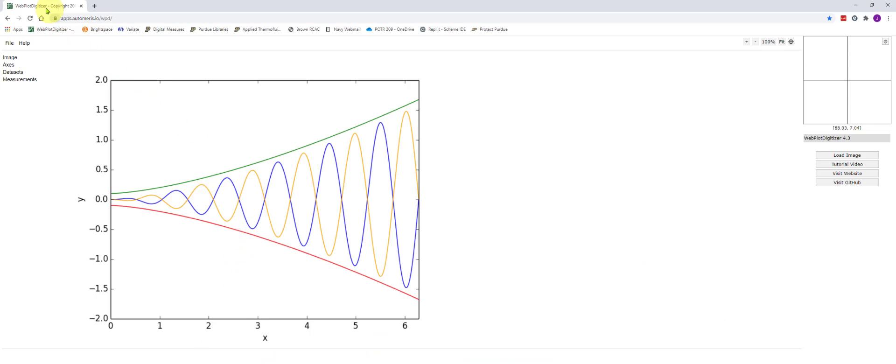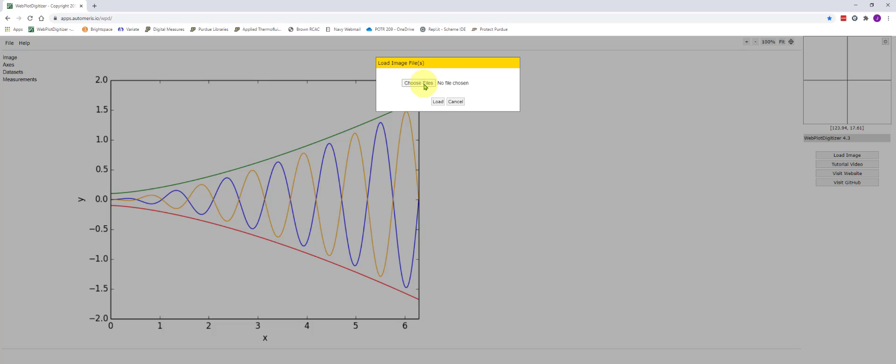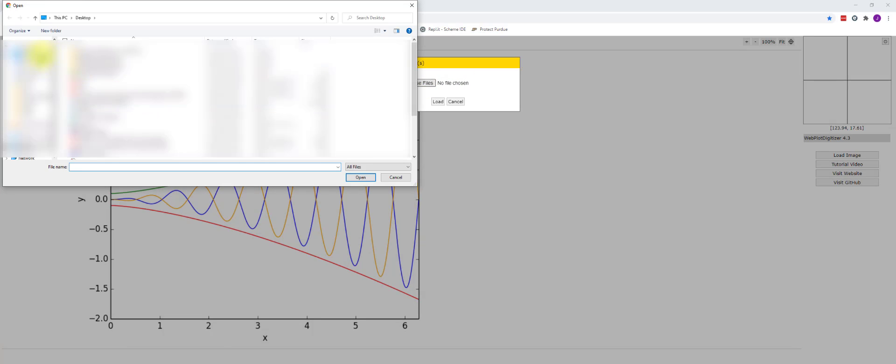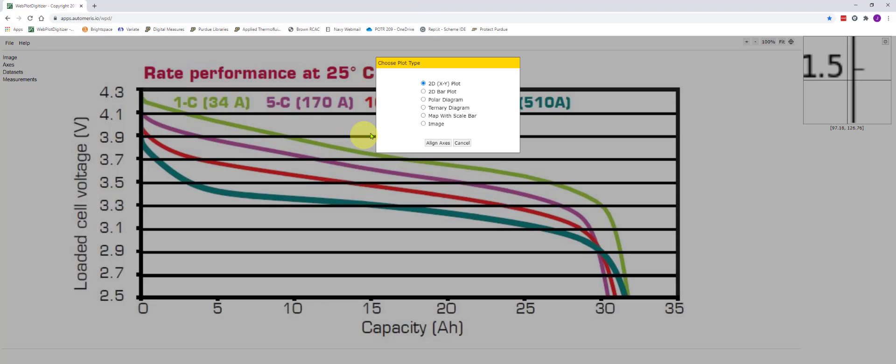I'm going to browse to open any internet browser of your choice and browse to the site apps.automerus.io slash WPD. Go to file and click load images and choose the file that you saved earlier. When you're asked to choose plot type, select 2D xy plot and click align axes.